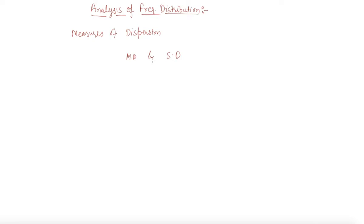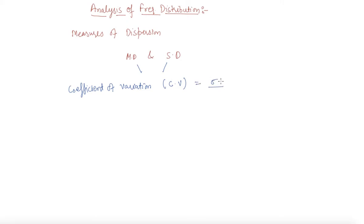Whenever we want to compare the variability — that is, how two terms differ with the same mean but are measured in different units — we do not merely calculate the measures of dispersion. We require measures which are independent of units, which is called the coefficient of variation, also denoted by Cv. The formula for Cv is: sigma (standard deviation) divided by mean, multiplied by 100.